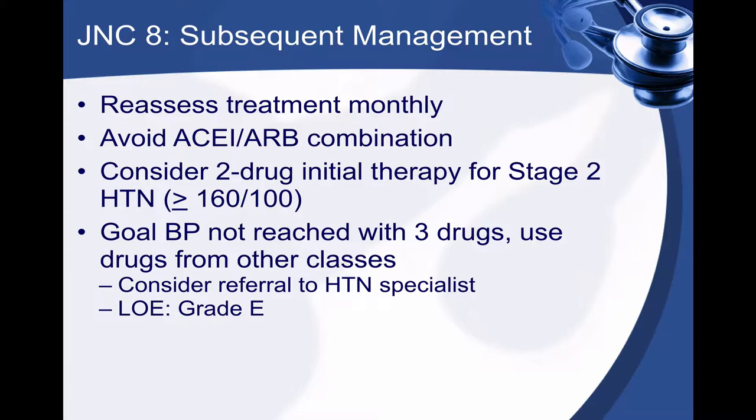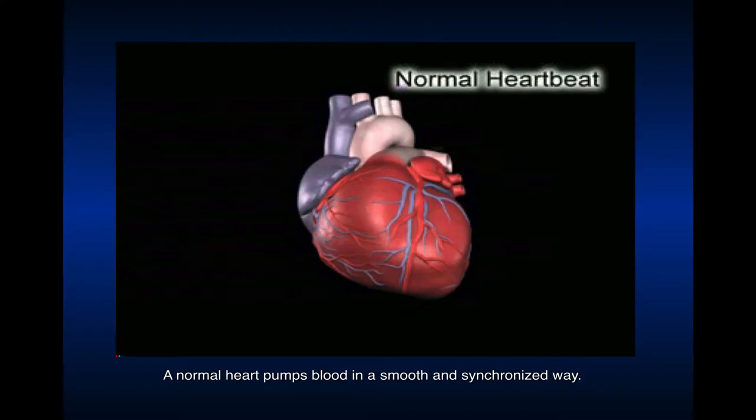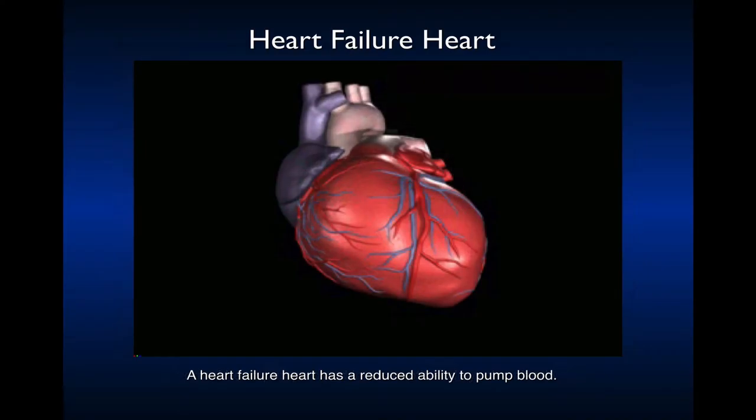Avoid ACEs and ARBs in combination — when you put them together, it increases the risk of hyperkalemia by 20%. Consider two-drug initial therapy for stage 2 hypertension. Once we put someone on therapy, counsel them about dizziness initially and being careful going from sitting to standing. Reevaluate every two to three weeks. If they have comorbid conditions like diabetes or chronic kidney disease, ACEs or ARBs are a good option. In chronic kidney disease where ACE and ARB can't be used, non-dihydropyridine calcium channel blockers like diltiazem or verapamil can work. In heart failure, the cornerstones are ACEs, ARBs, and beta blockers.